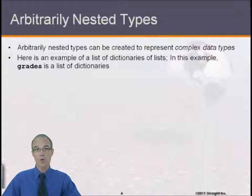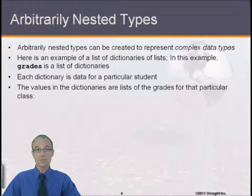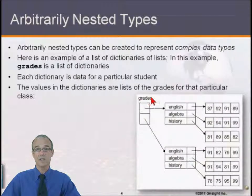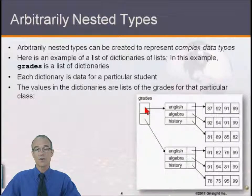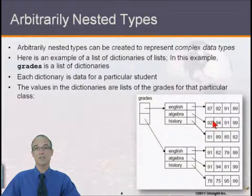This example, grades, is going to be a list of dictionaries. Each dictionary will be data for a particular student, and the value in the dictionary will be lists of the grades for that particular class. Pictorially we see the list grades — this is a list for each student. For student zero, we see the classes that student was involved with: English, Algebra, History. And for each class, we see the grades. So now we have three levels of data: a list of dictionaries of lists — arbitrarily complex data. Student two also has an English, Algebra, and History set of grades.